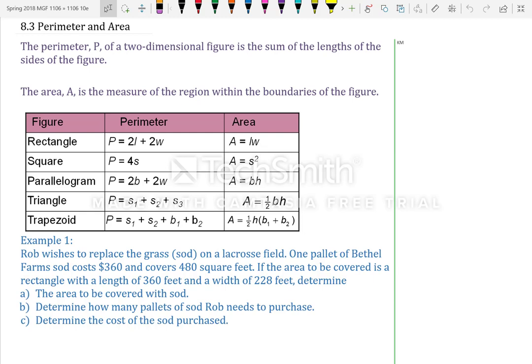8.3, Perimeter and Area. The perimeter P of a two-dimensional figure is the sum of the lengths of the sides of the figure. The area A is the measure of the region within the boundaries of the figure.